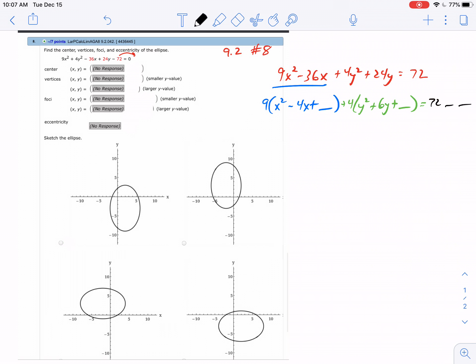With the new b value, you take the negative 4 and divide by 2 to get negative 2. Put that in parentheses and square it to get 4. If I put a 4 here, remember that's 36 technically out front, so I'll add 36 over here.